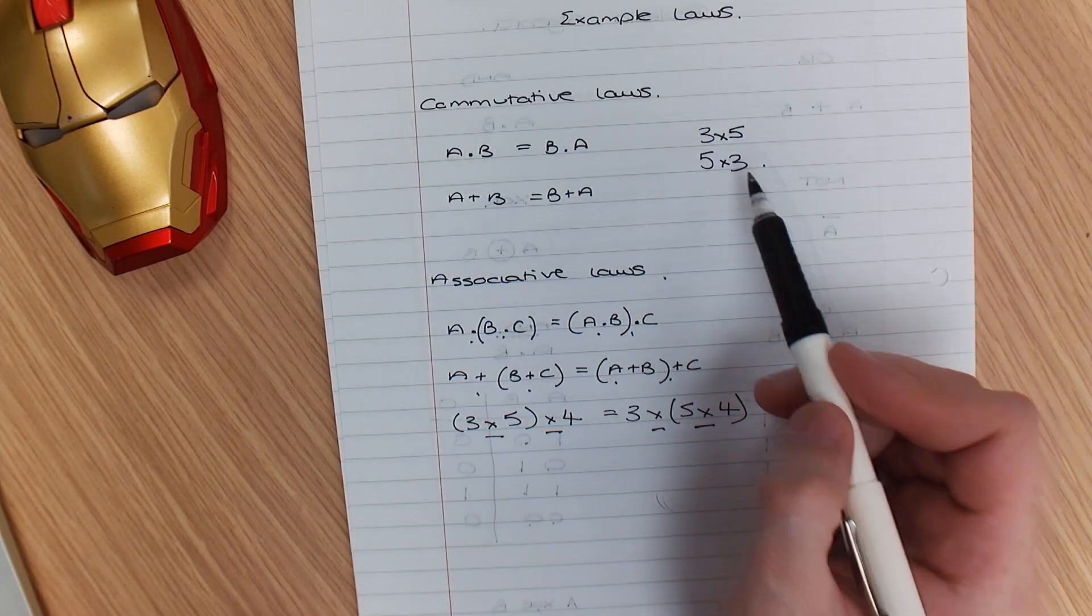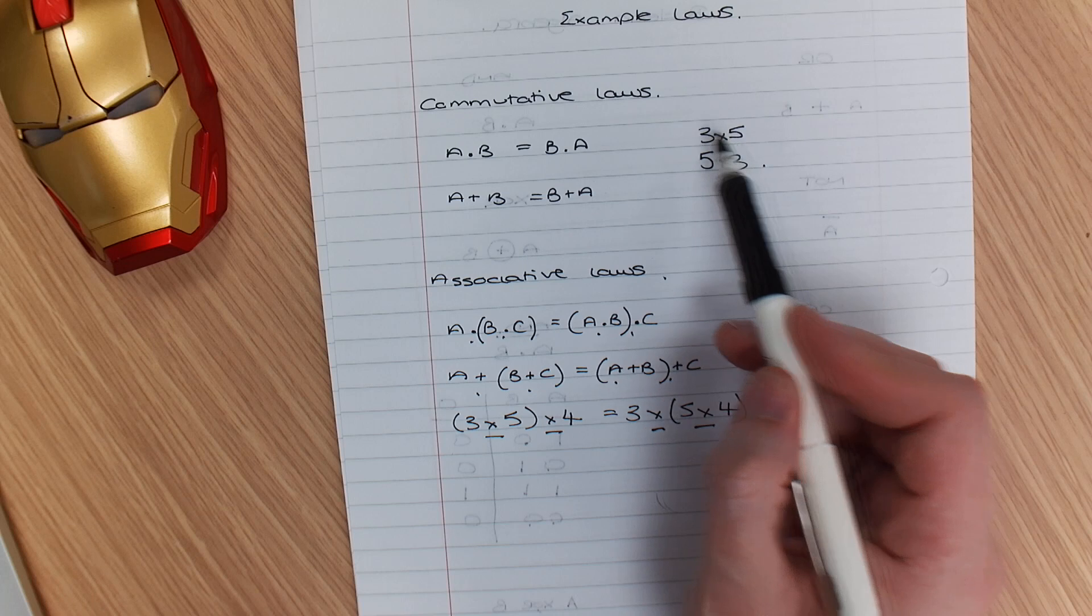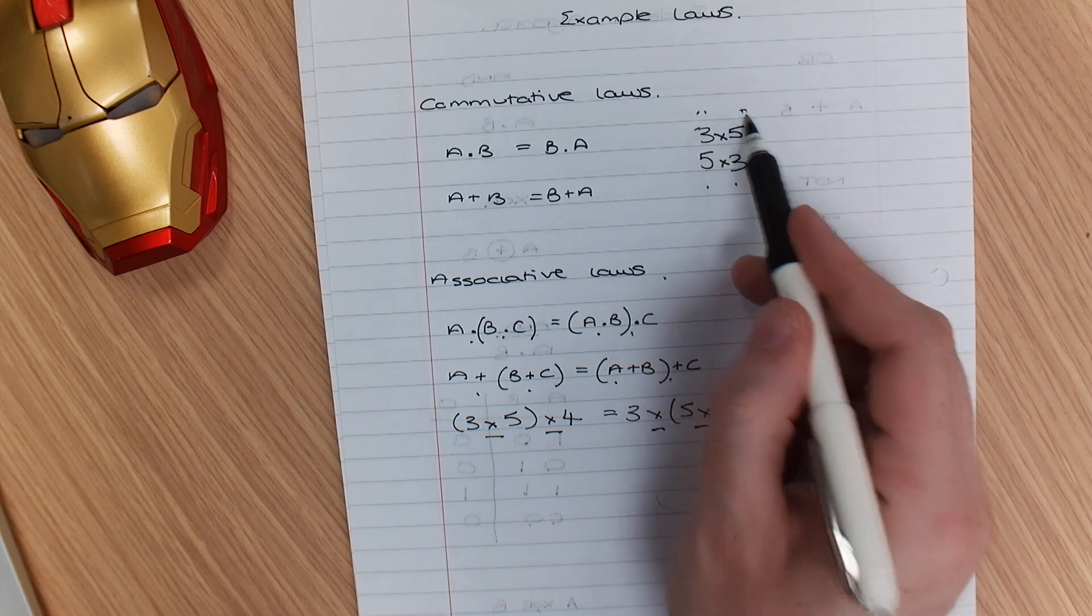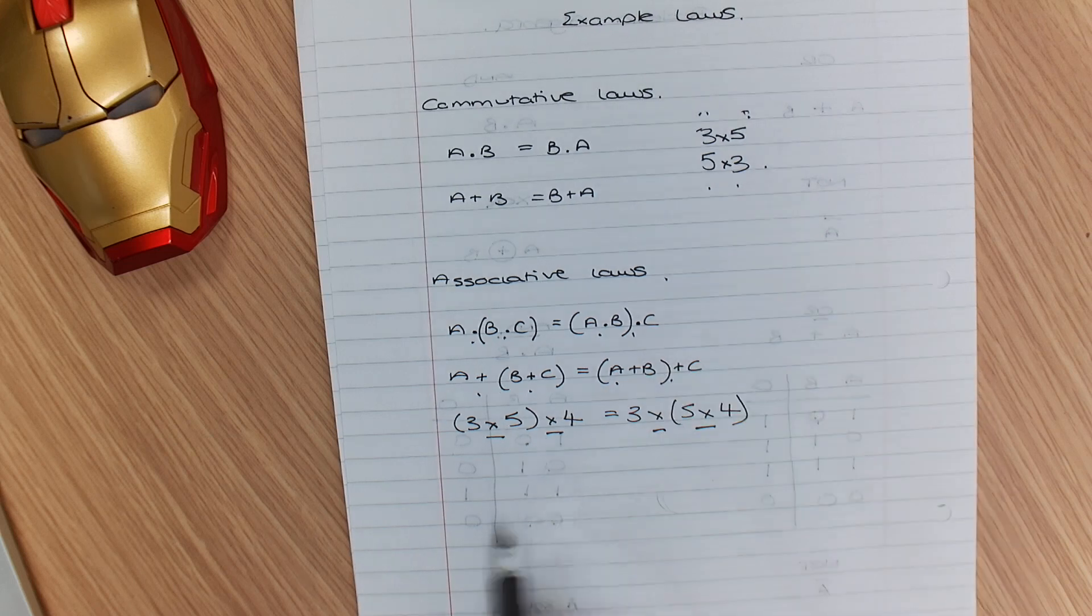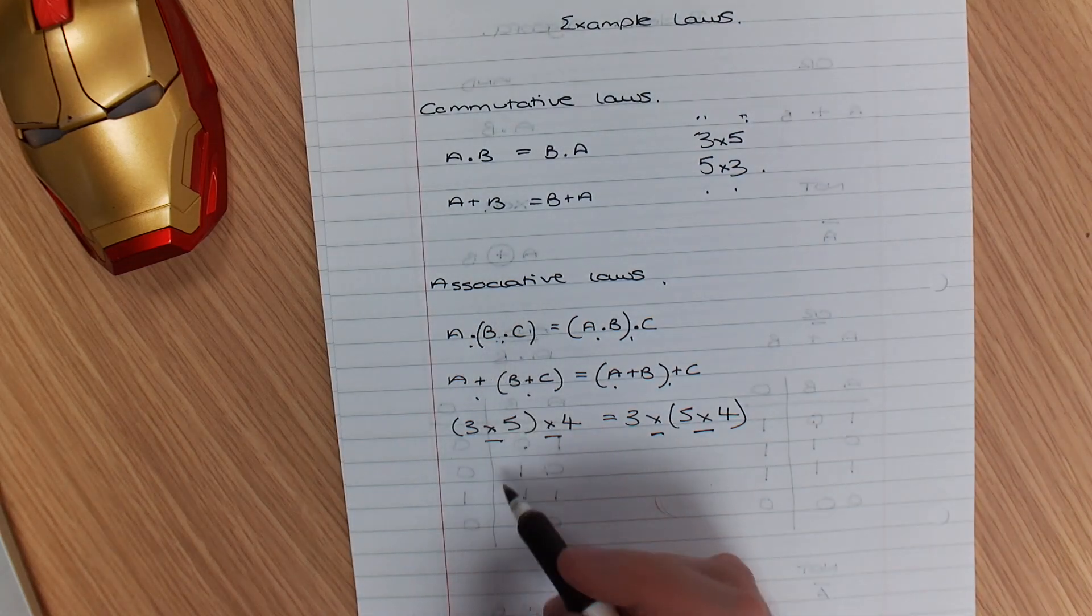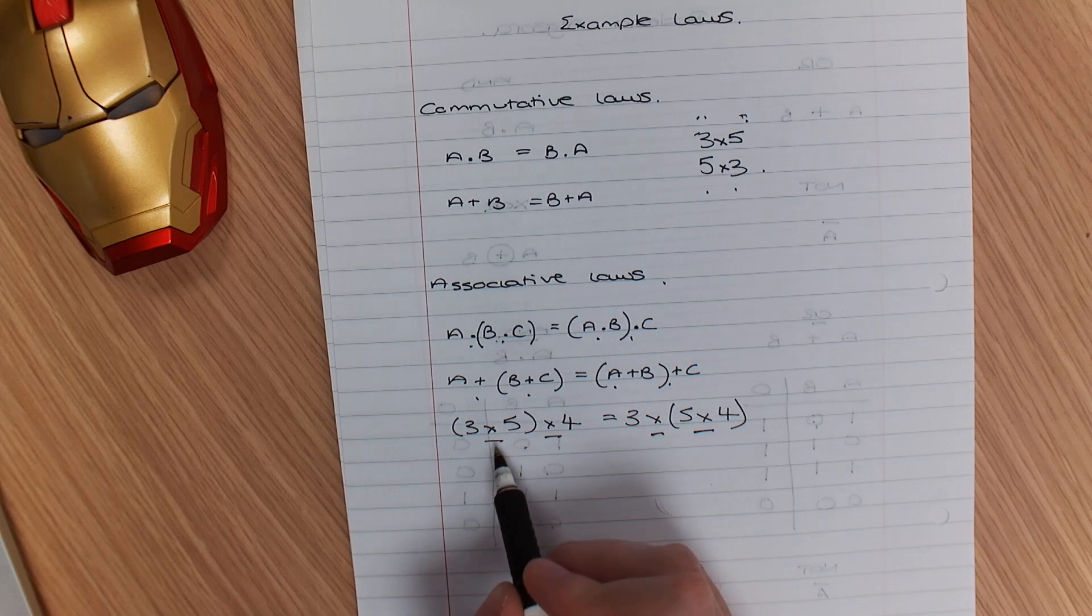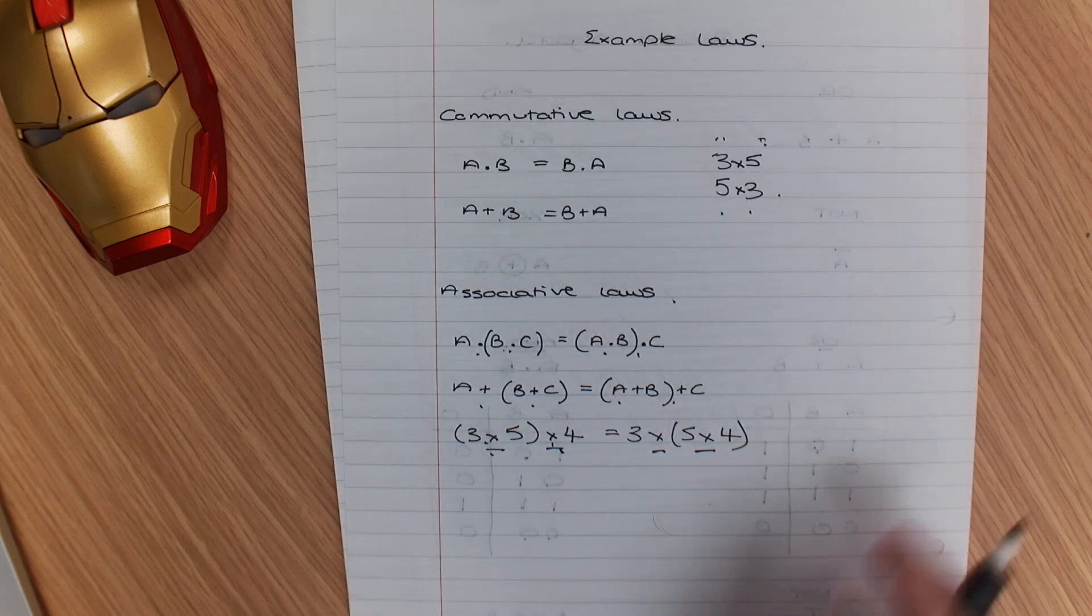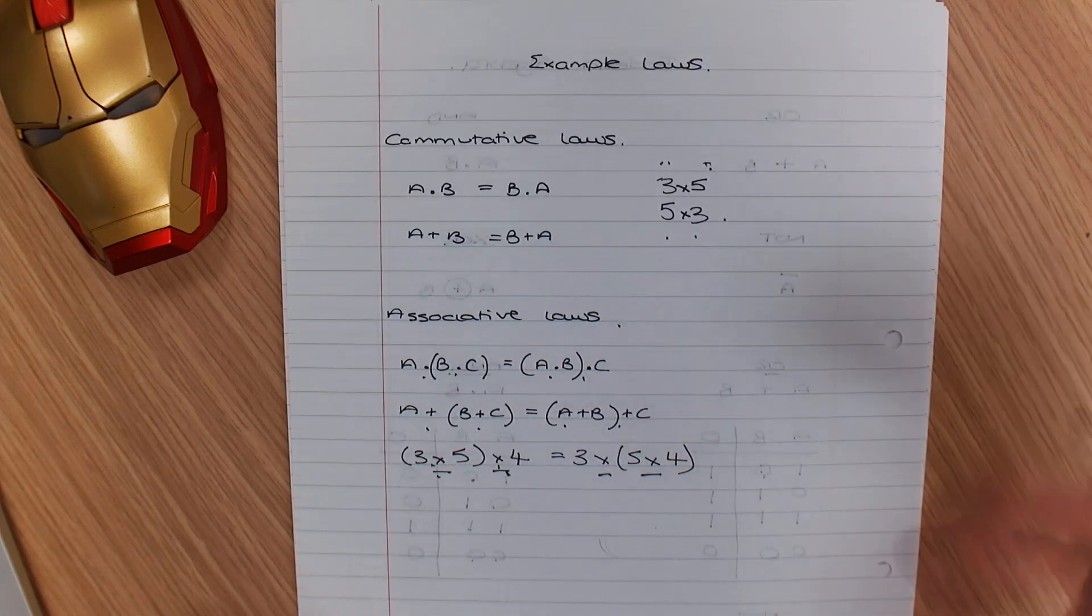So we've got commutative, where the actual order does not matter, and then we've got associative, where when all the operators are the same, the order doesn't matter. That's another video to help you along the way.